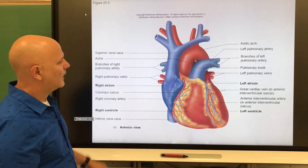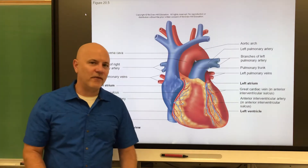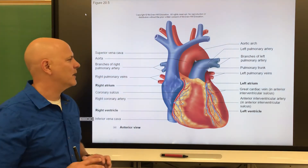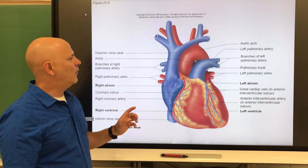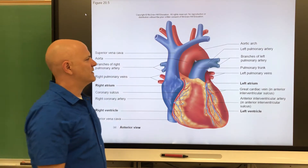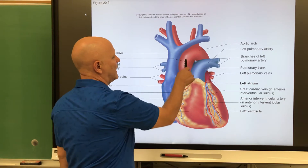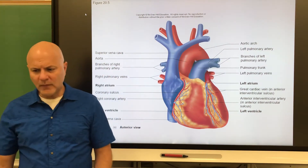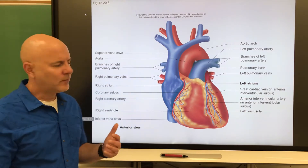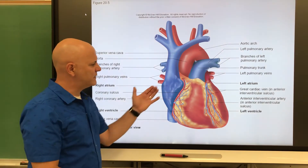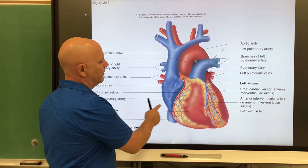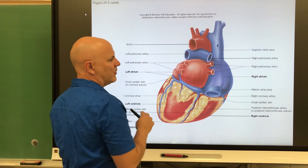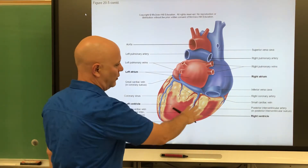Here is another picture showing the epicardium, myocardium, and endocardium. This is a front view of the heart. When we look at pictures showing blood vessels, red indicates high oxygenation and blue indicates low oxygenation. This is the front view, and this is the back view of the heart.